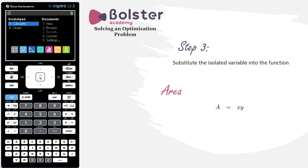In step 3, we substitute the variable we isolated in step 1 into our expression from step 2. So we replace y with (150 - x), multiply out the brackets, and we get area = 150x - x².